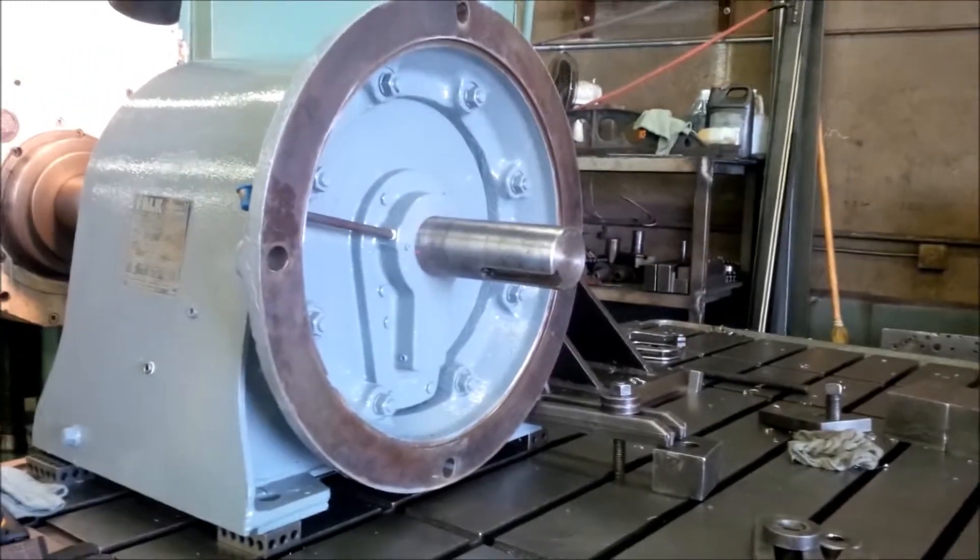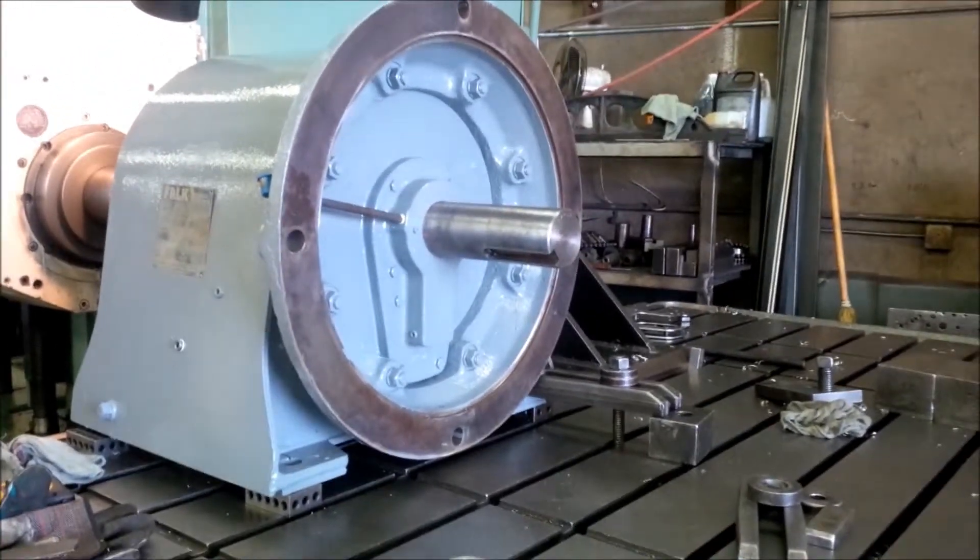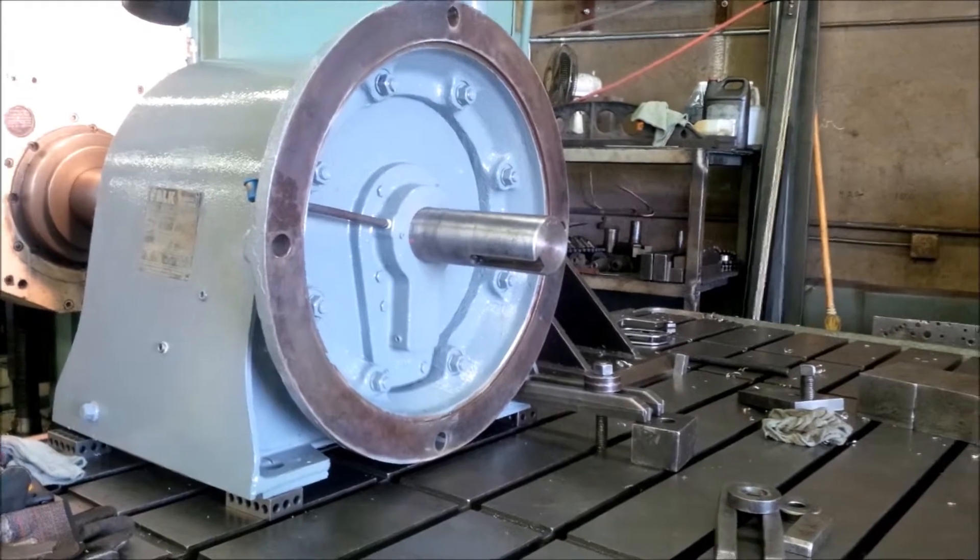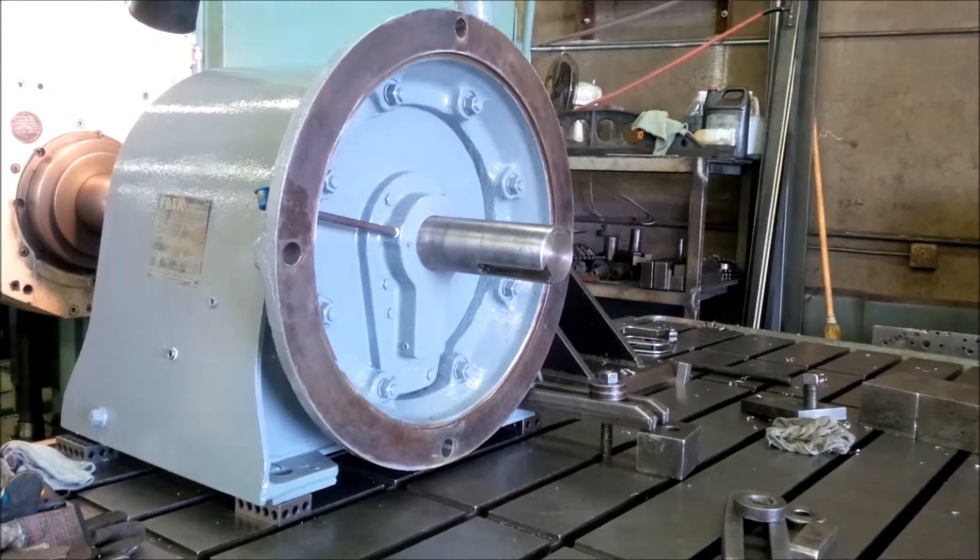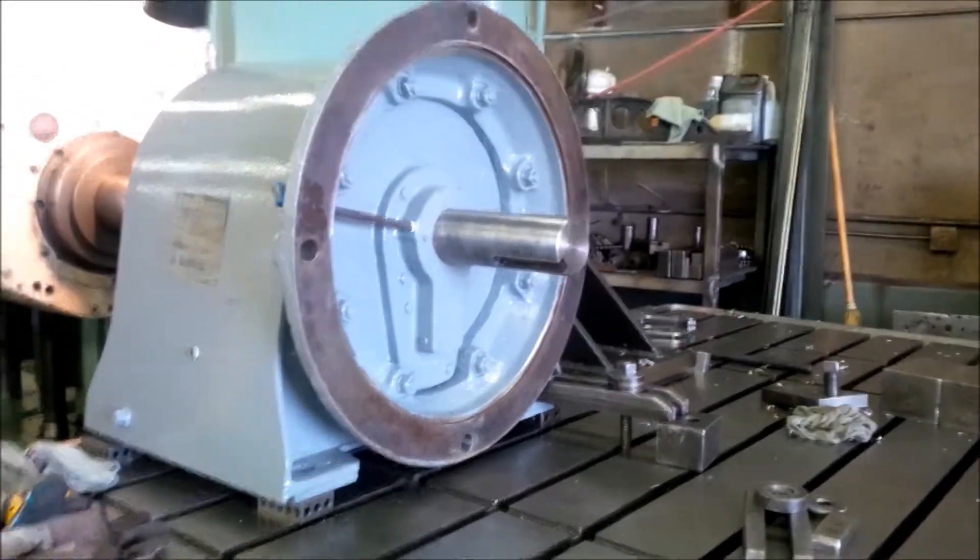You can see how slow that shaft is turning. It's 11,000 to 1 ratio. It takes about a half hour for one absolute turn.